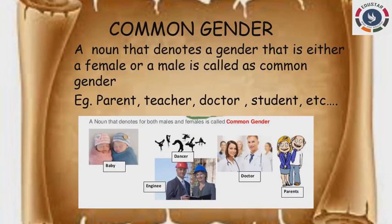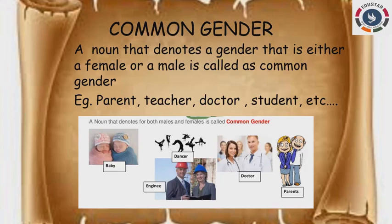Kids, the next one is common gender. You know what a common noun is — a name of a person, place, thing, or animal in common. Likewise, common gender is a word used for either a female or a male in common. For example, student — we don't call someone a male student or female student specifically. Similarly, doctor and teacher are used for both male and female. Words used for both genders are called common gender.